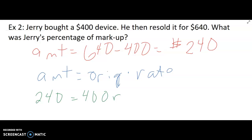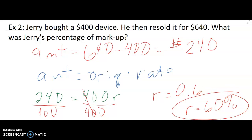So now that I have an equation where I have a coefficient of 400 times a variable of r, we can divide both sides by 400 to isolate the variable. And I now find that r equals, if we take 240 divided by 400, I get 6 tenths. But I want that as a percentage. So if I change 6 tenths to a percent, I get 60%. So Jerry marked this device up 60% before reselling it.